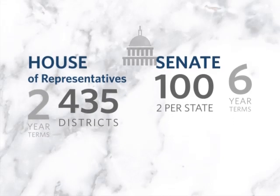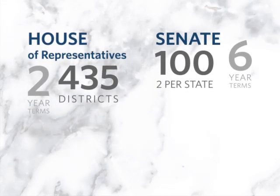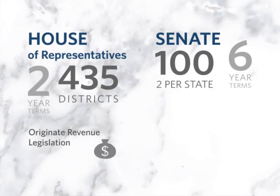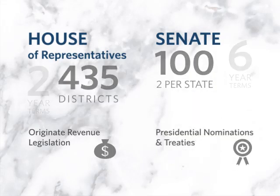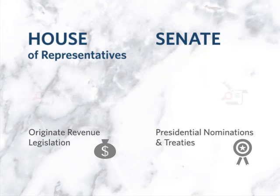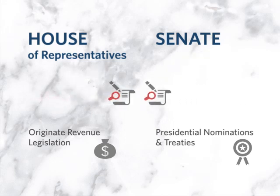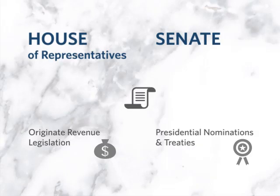The two chambers are fundamentally equal in their legislative roles and functions. Only the House can originate revenue legislation, and only the Senate confirms presidential nominations and approves treaties. But the enactment of law always requires both chambers to separately agree to the same bill in the same form before presenting it to the president.